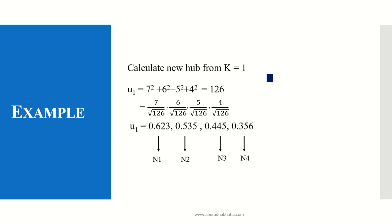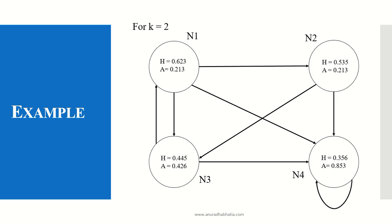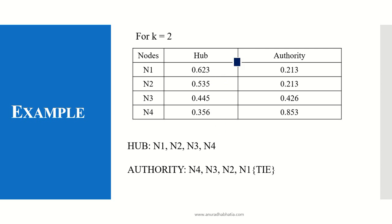Similarly, we calculate the new hub for K equal to 1. The new hub values were 7, 6, 5, and 4. We compute 7² + 6² + 5² + 4² = 126, and calculate the new normalized hub values U1 accordingly. We then draw the diagram for K equal to 2 and write down the hub and authority values in the table. Hub ranks are N1, N2, N3, N4. Authority ranks are N4, N3, N2, N1, with a tie between N1 and N2.